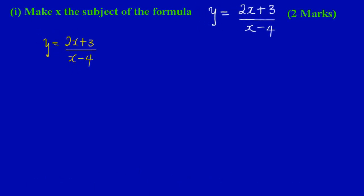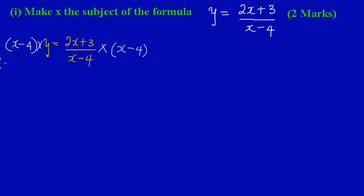If you notice what is happening here, I have (x - 4) dividing my right side. In order to move this (x - 4), I have to do the opposite of division, which is multiplication. So I'm going to multiply both sides of my equation by (x - 4). For the equation to remain balanced, what you do to one side you must do to the other side. So (x - 4) will cancel out with (x - 4) on the right.